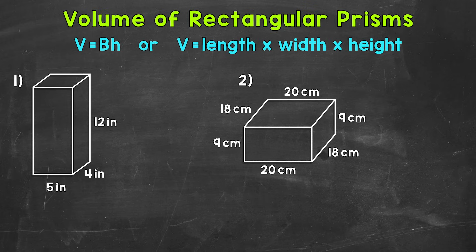Remember, volume is the amount of space an object takes up. Now for any prism, we can use the formula volume equals the area of the base times the height.